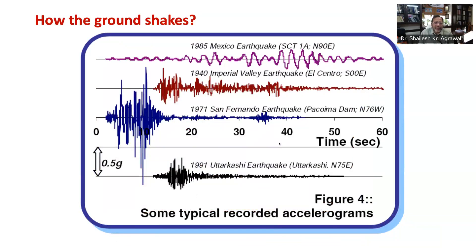Let me also define a very important term called peak ground acceleration. The peak amplitude of this accelerogram is called peak ground acceleration or PGA. For example, a horizontal PGA of 0.6 G is equivalent to 0.6 times the acceleration due to gravity, meaning this PGA can cause a horizontal force on a structure equal to 60 percent of its weight. Just imagine a PGA of 1 G or greater — that has the potential of toppling the structure.